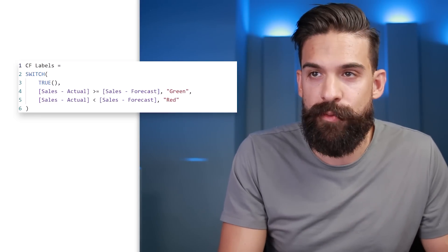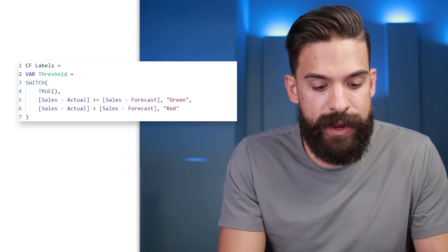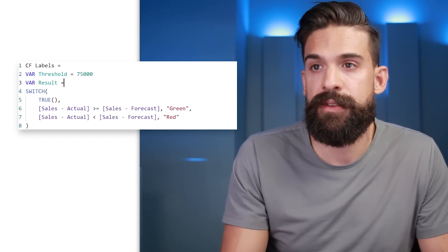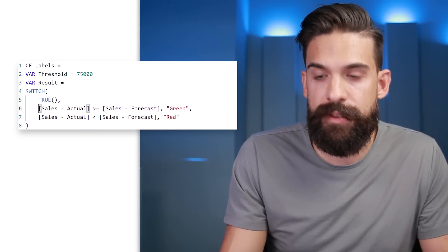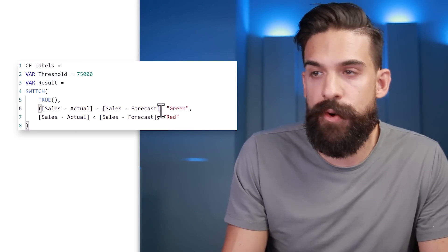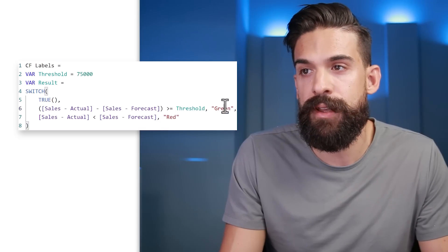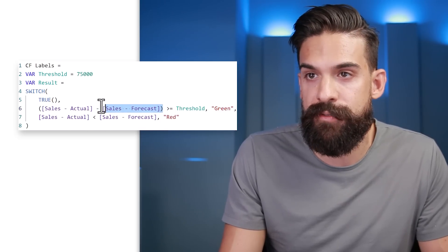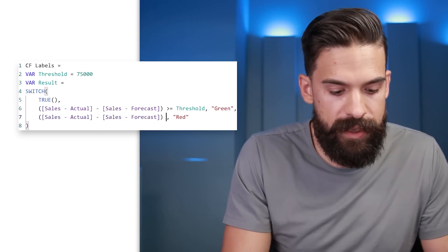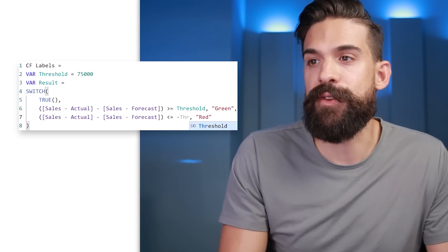Let's update this measure and incorporate a threshold. Whenever the difference between actual and forecasted value is bigger than the threshold, we show the label; otherwise we don't. First, let's add a variable that holds the threshold value so we can easily change it later — let's say the threshold is 75,000. We can also create a variable for the result. We check the difference between actual and forecasted sales and whether it's greater than or equal to the threshold (green), or below or equal to negative threshold (red).